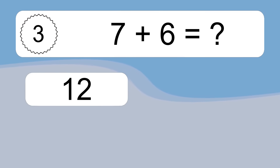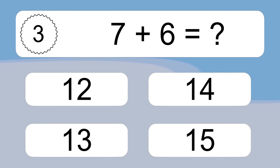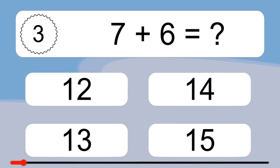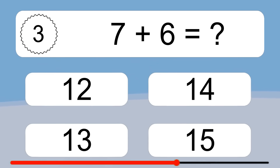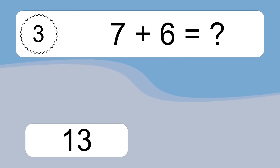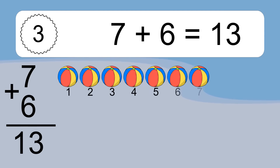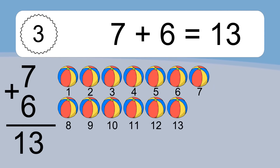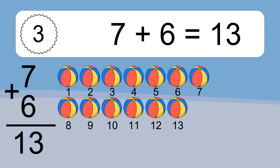7 plus 6 equals what? 7 plus 6 equals 13. Let's count it. 1, 2, 3, 4, 5, 6, 7, 8, 9, 10, 11, 12, 13.